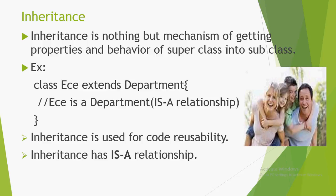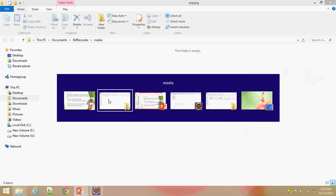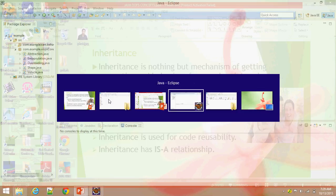Inheritance is used for code reusability. By extending the parent class into the child class, whatever properties are available in the parent class will come into the child class. We will see this with an example.